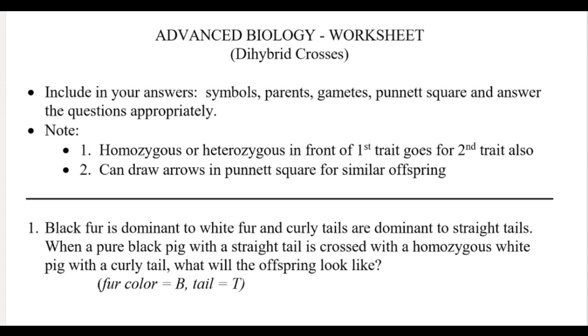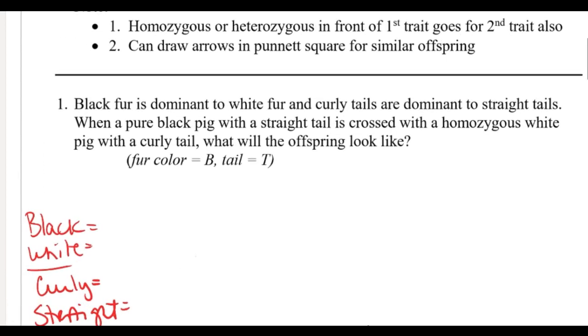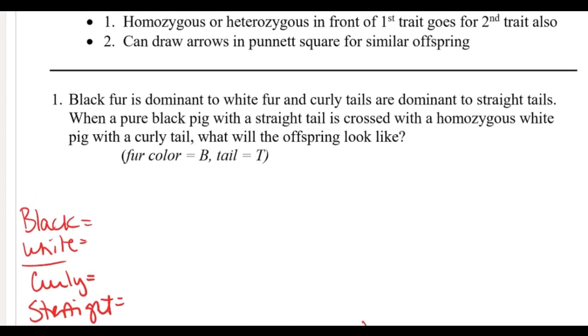Let's go ahead and do number one. I've got black fur dominant to white and curly tail dominant to straight, so I've already started filling a few things out. If I have black fur, that's going to be a capital B, and white. Then curly is dominant and we're going to use T's.